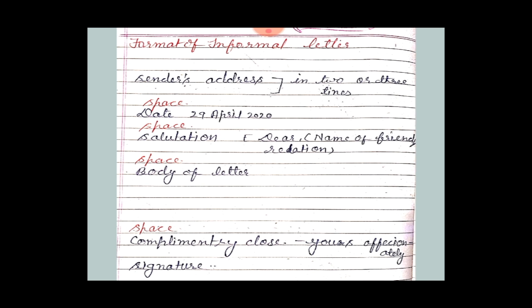Now I will explain the format of an informal letter. First, we write the sender's address — more than two or three lines. The city name is always written on a separate single line.